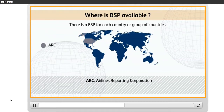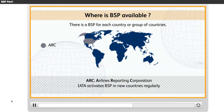In the United States, BSP is replaced by the ARC, Airline Reporting Corporation. In some countries, it is not available for administrative reasons — this is the case in Algeria, Belarus, and some other African and Asian countries. However, IATA activates BSP in new countries regularly. There is also the case of Russia, where two systems coexist: BSP and TCH.